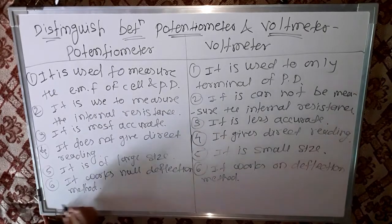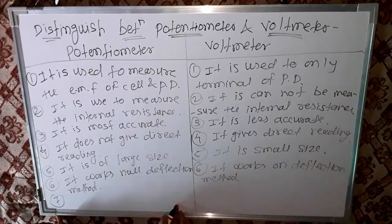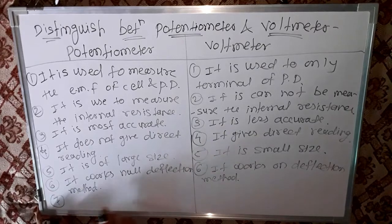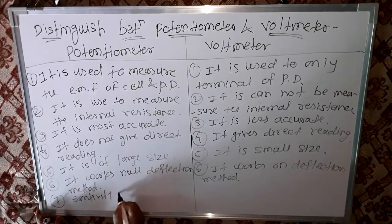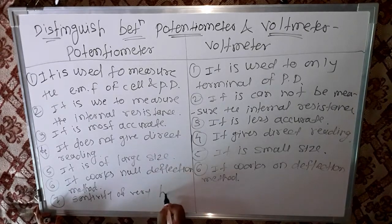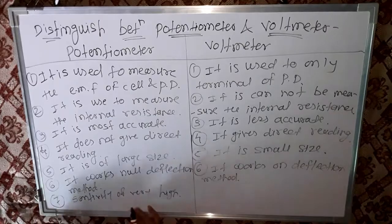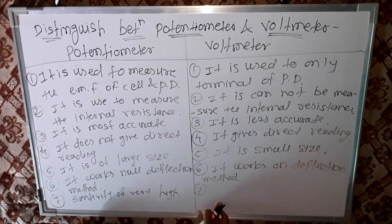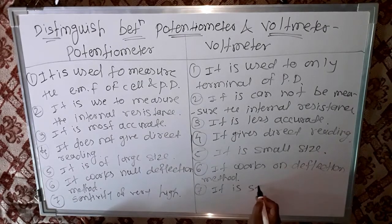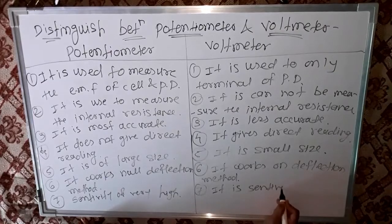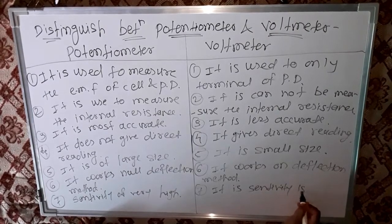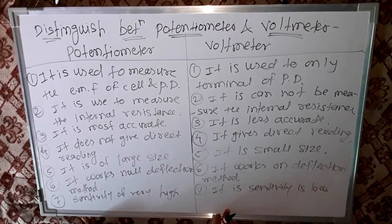Seventh point: the potentiometer has very high sensitivity. In contrast, the voltmeter has low sensitivity.